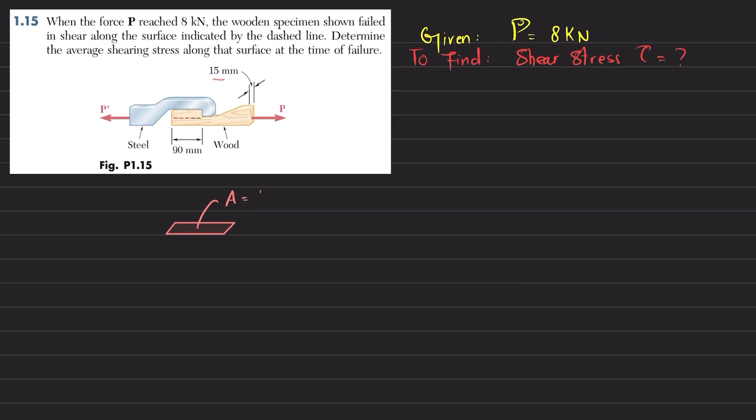This is the shear area, and that is equal to 15 multiplied by 90, and that is 1350 square millimeter.